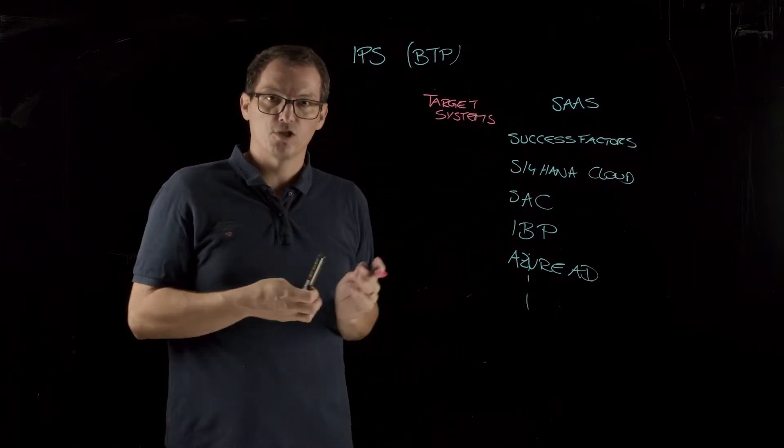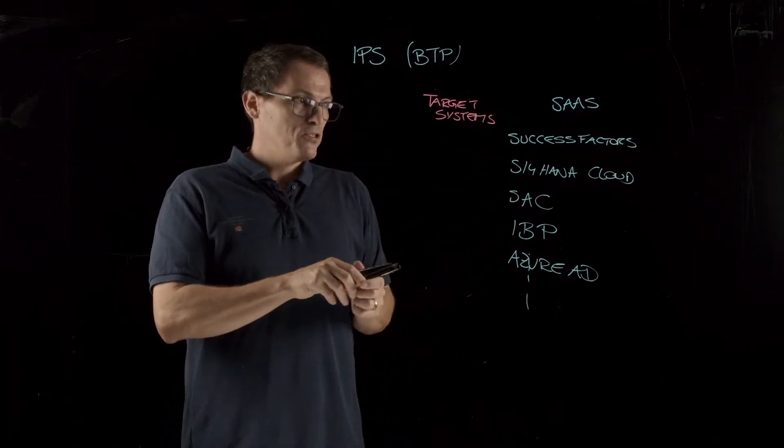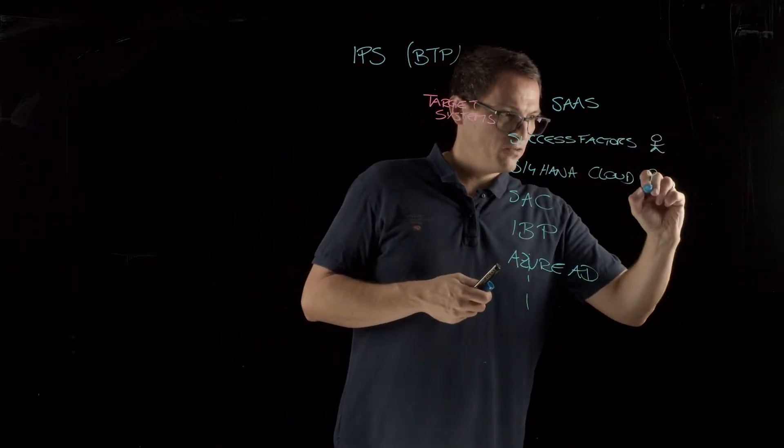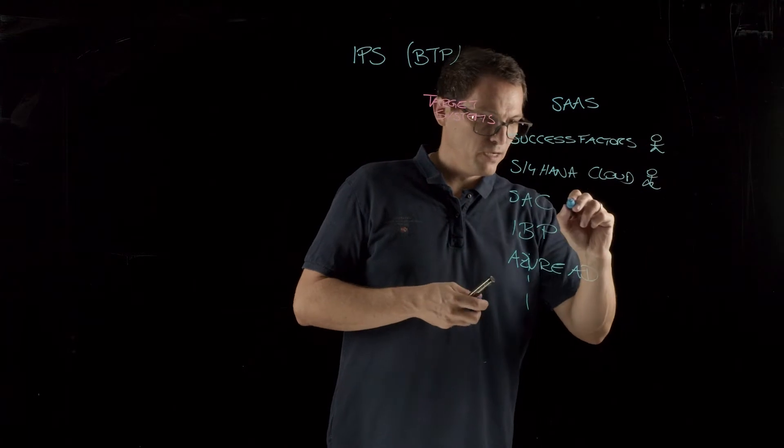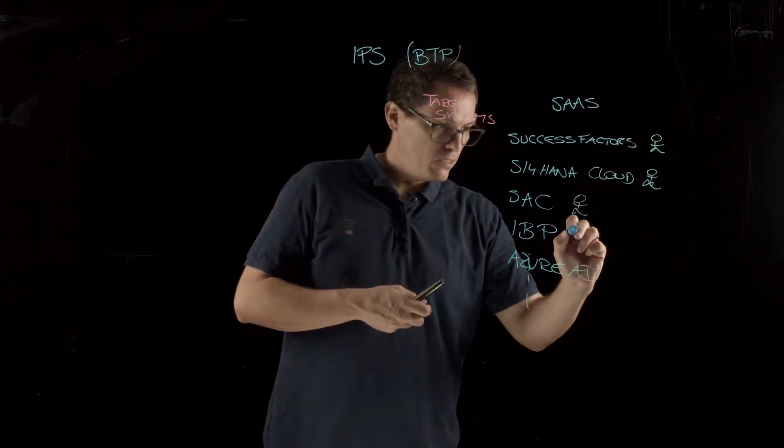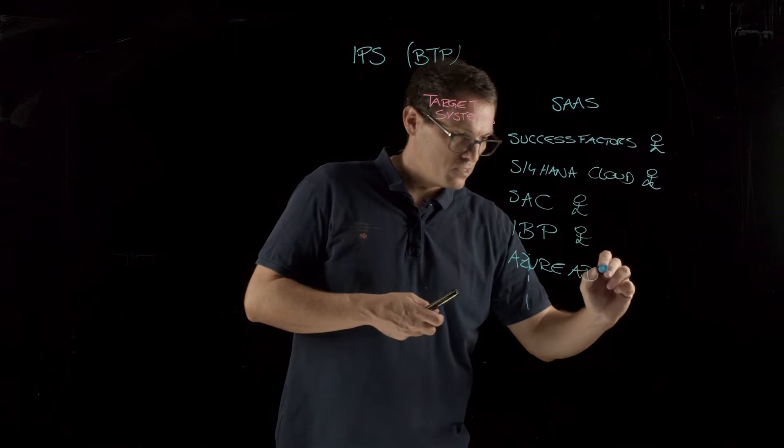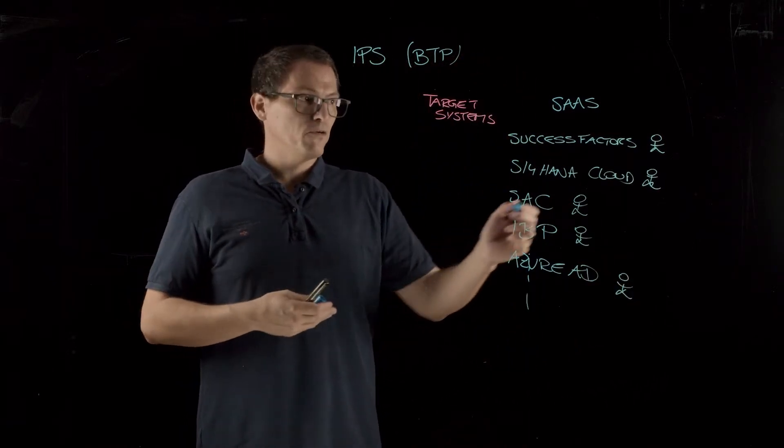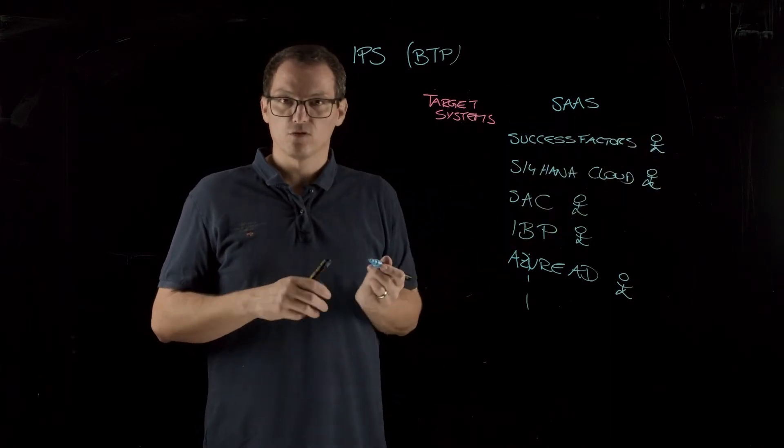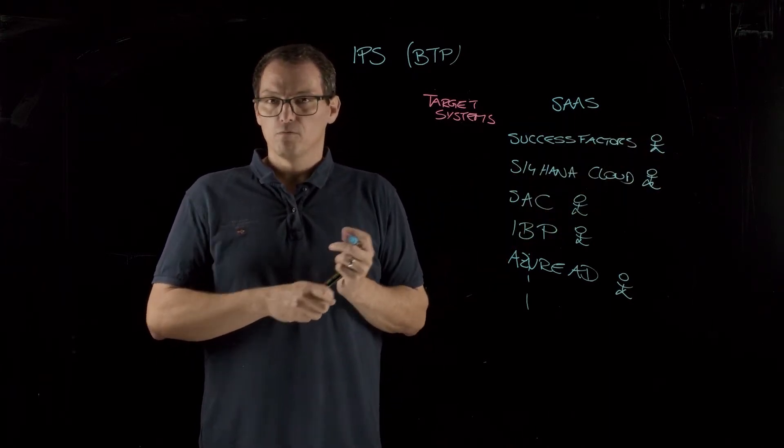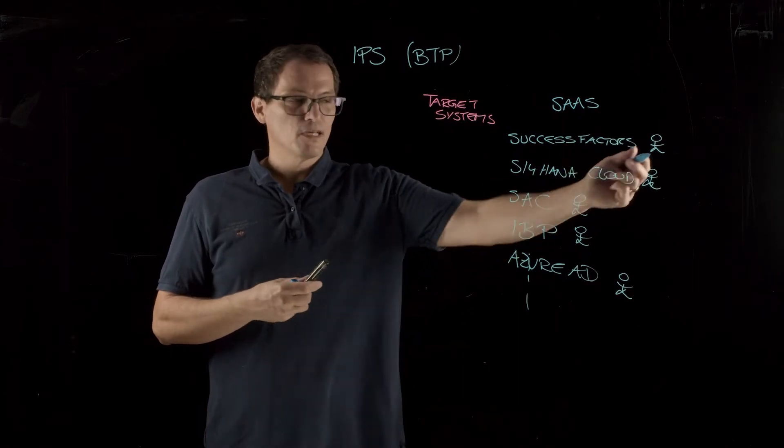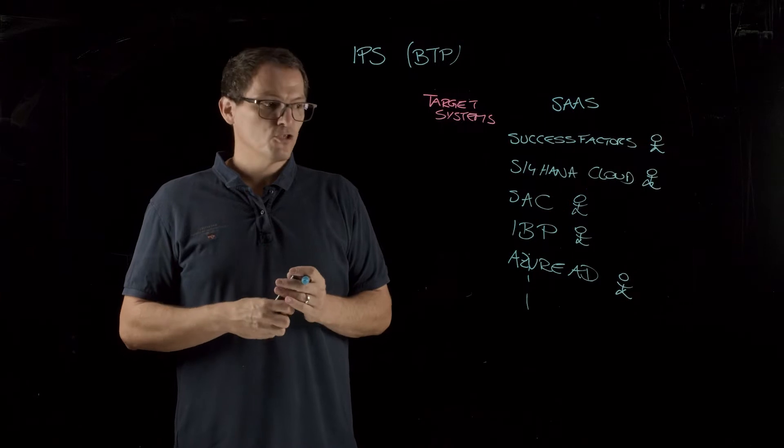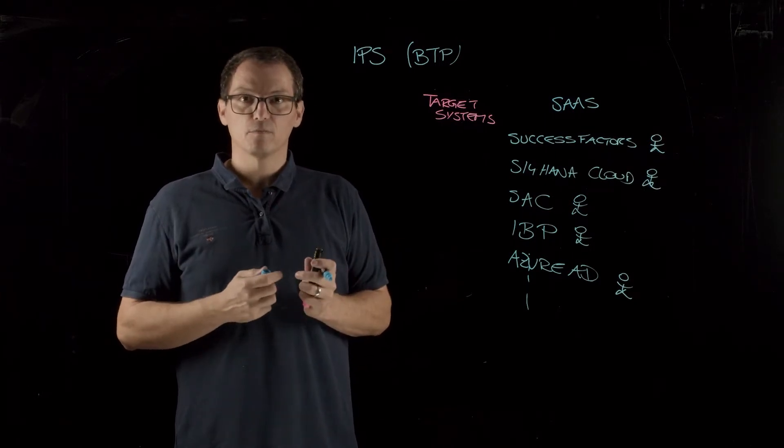Every system maintains the users. So we have the users inside SuccessFactors, inside S4HANA Cloud, inside the Analytics Cloud, inside IBP, inside Azure Active Directory, and so on. And the roles themselves are also checked within the SuccessFactors system, for instance, which means the authorization check is done inside the system. The authentication can be done in the identity authentication service, in any third-party identity provider.